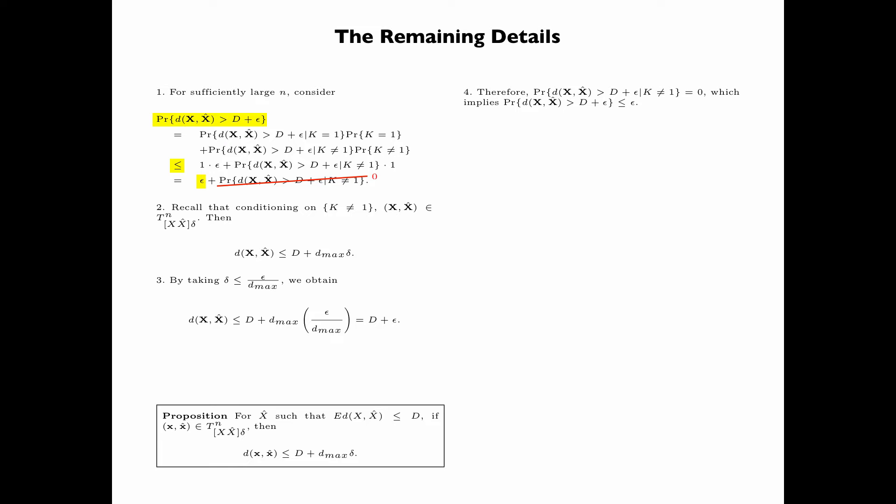It is then apparent that the event k not equal to 0 corresponds to a successful encoding, and the event k equals 1 corresponds to an encoding error. Thus, we have shown the existence of a code such that 1/n times log m — that is the rate — is less than or equal to I(x;x̂) plus ε by construction. And through our analysis, we see that the probability that d(x,x̂) is greater than d plus ε is less than or equal to ε.